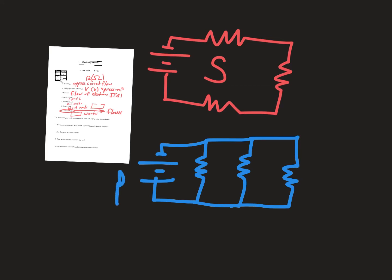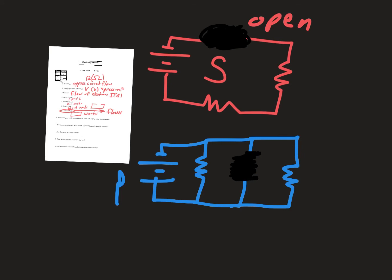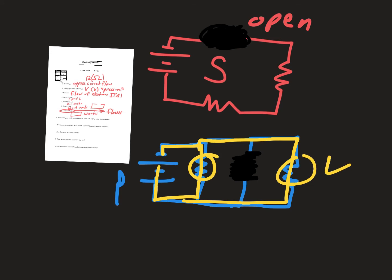In a parallel circuit, if one light bulb goes out, the others still work. But in a series circuit, if one light bulb goes out, the circuit becomes open — electricity can't flow, there's nowhere for it to go. In parallel, if the middle one goes out, there are still two paths current can take, so those two still work.